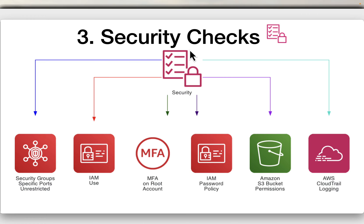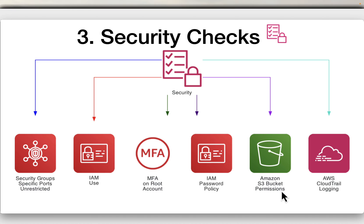Security checks include security groups with specified ports unrestricted — for example SSH access open to 0.0.0.0/0 — IAM usage in general, whether multi-factor authentication is enabled on the root account, IAM password policy strictness, Amazon S3 bucket permissions being too relaxed or public, and whether AWS CloudTrail logging is enabled.